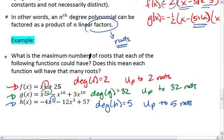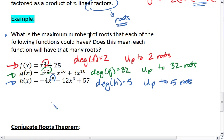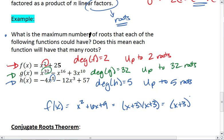Now again, this does not necessarily mean that we will have that many roots. For example, if I had f of x equals x squared plus 6x plus 9, that factors into x plus 3 times x plus 3 or x plus 3 squared. I have one root at x equals negative 3 for this problem.